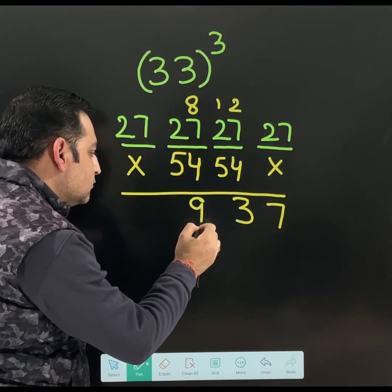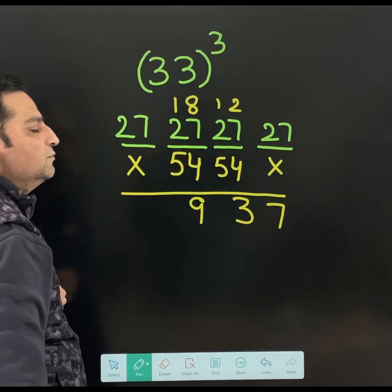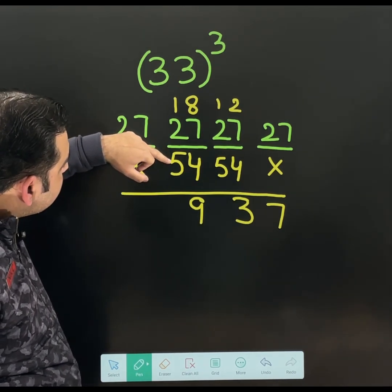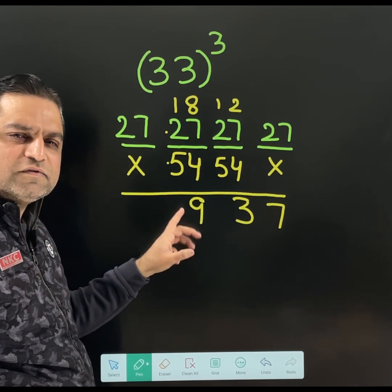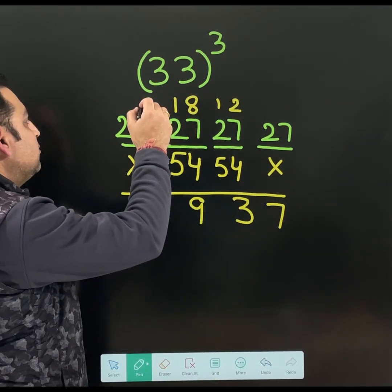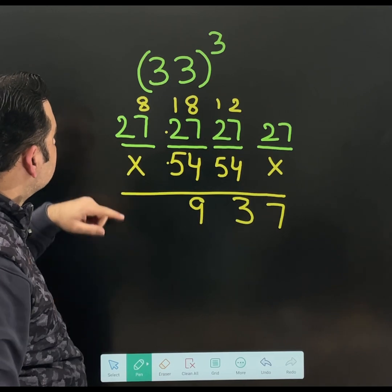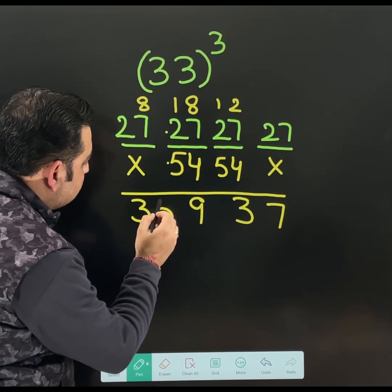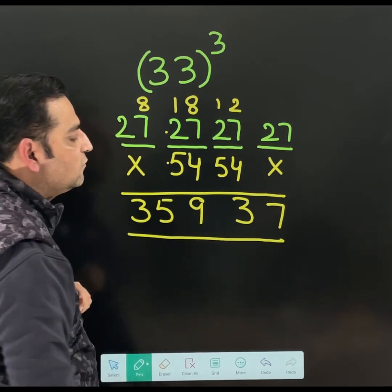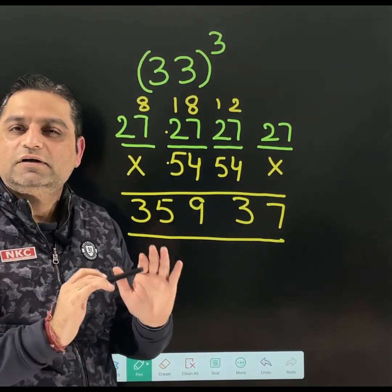5 plus 2, 7. 7 plus 1, 8. But we will not write 8 here. Single digit is already there. 8 will be moved to next value. Now, 27 plus 8 is 35. So 3, 5, 9, 3, 7 is the answer for 33 cube.